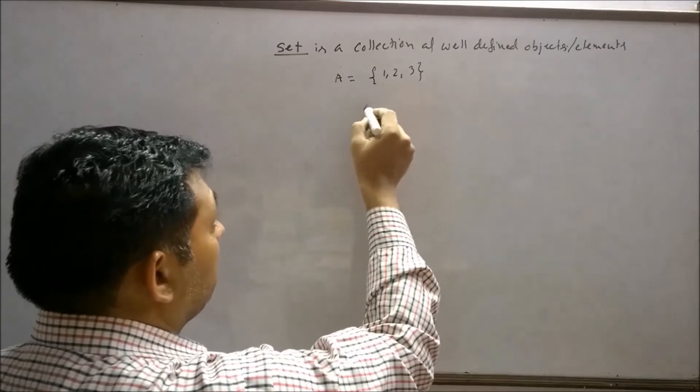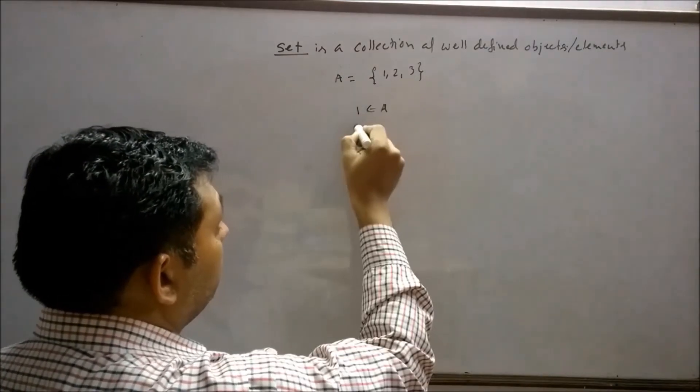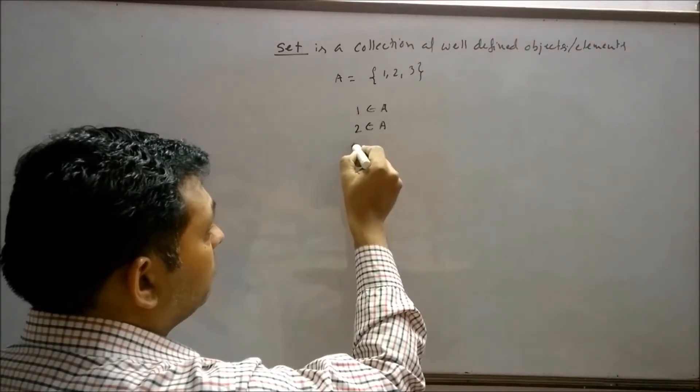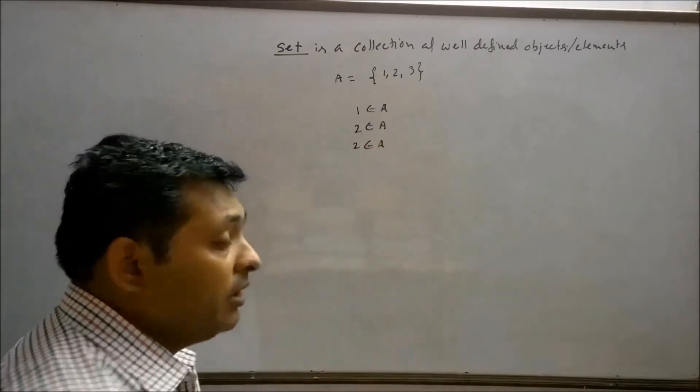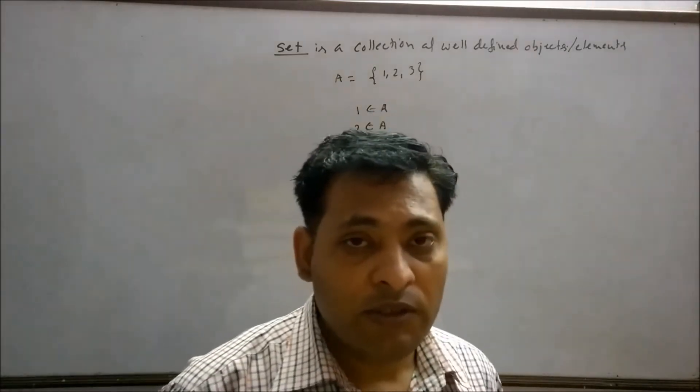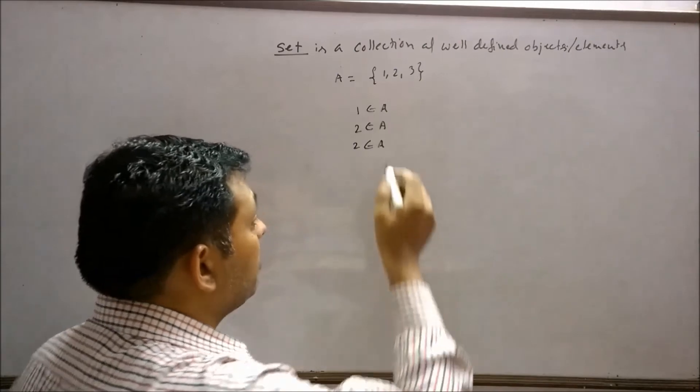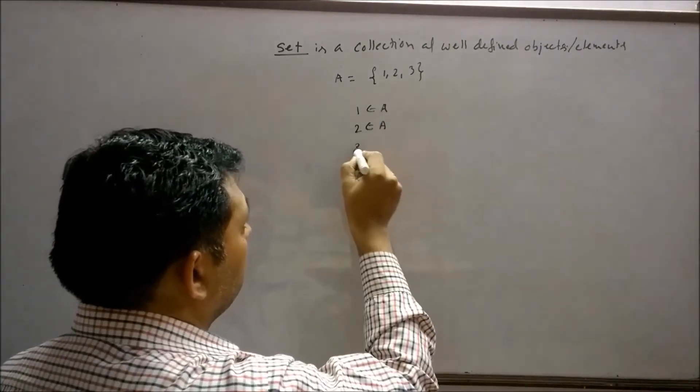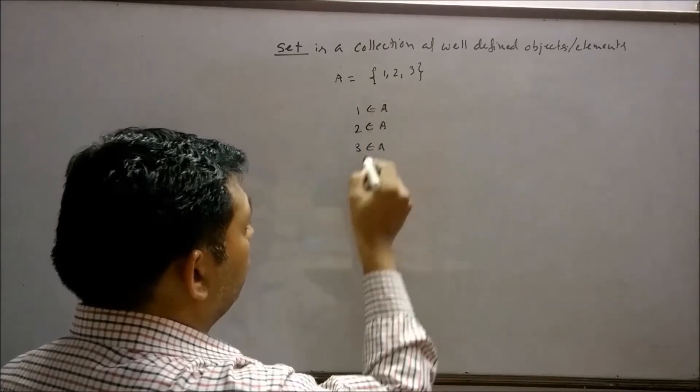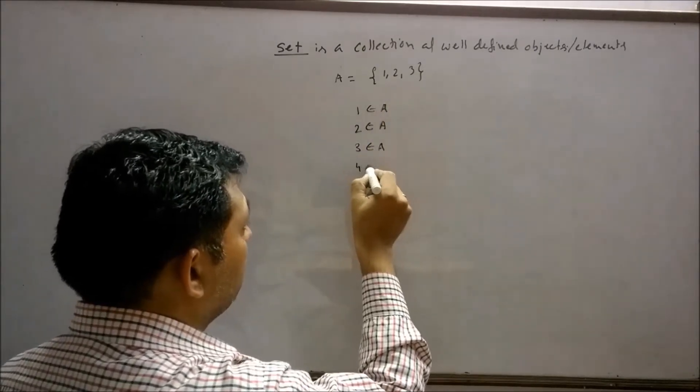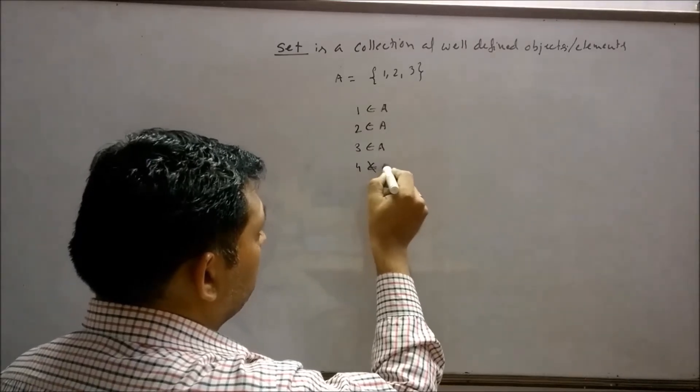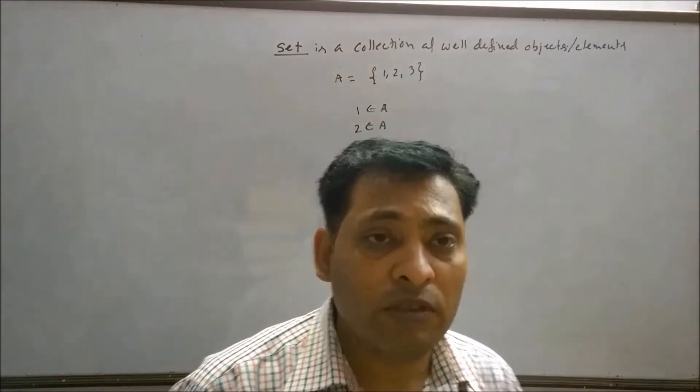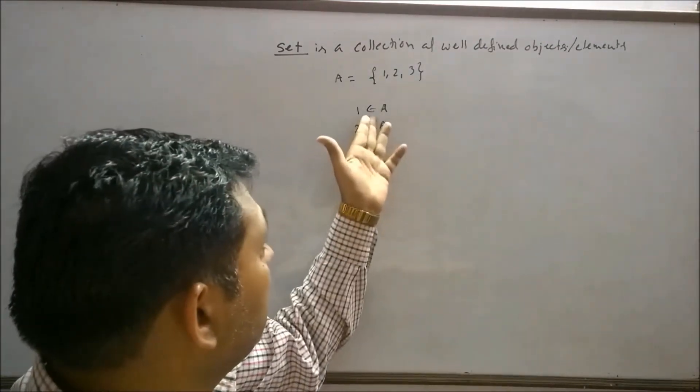Here we see that 1 belongs to A, 2 also belongs to A, 3 also belongs to A. We see that 4 is not in the set of A. So we can say 3 belongs to A, but 4 is not in the set of A, so we can say 4 is not belongs to A. Here, this is a sign of epsilon, which is a Greek symbol, which indicates belongs to.